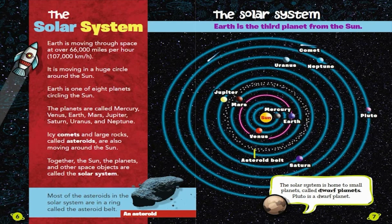The Solar System. Earth is moving through space at over 66,000 miles per hour, 107,000 kilometers per hour. It is moving in a huge circle around the Sun.